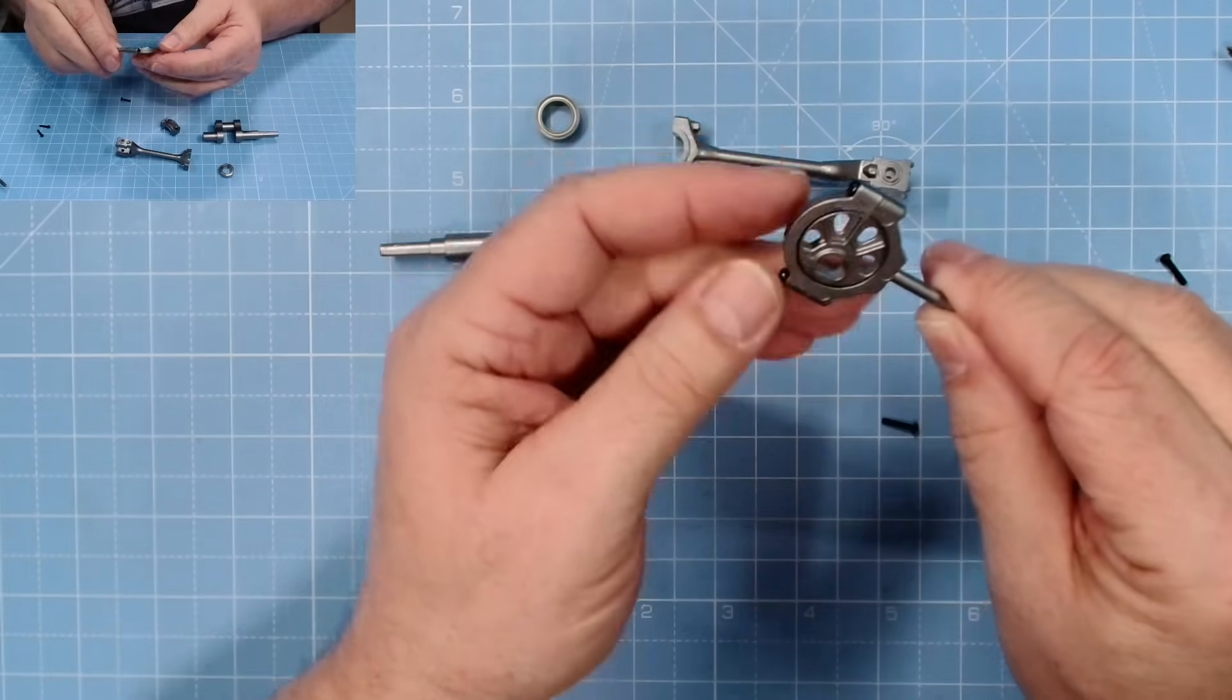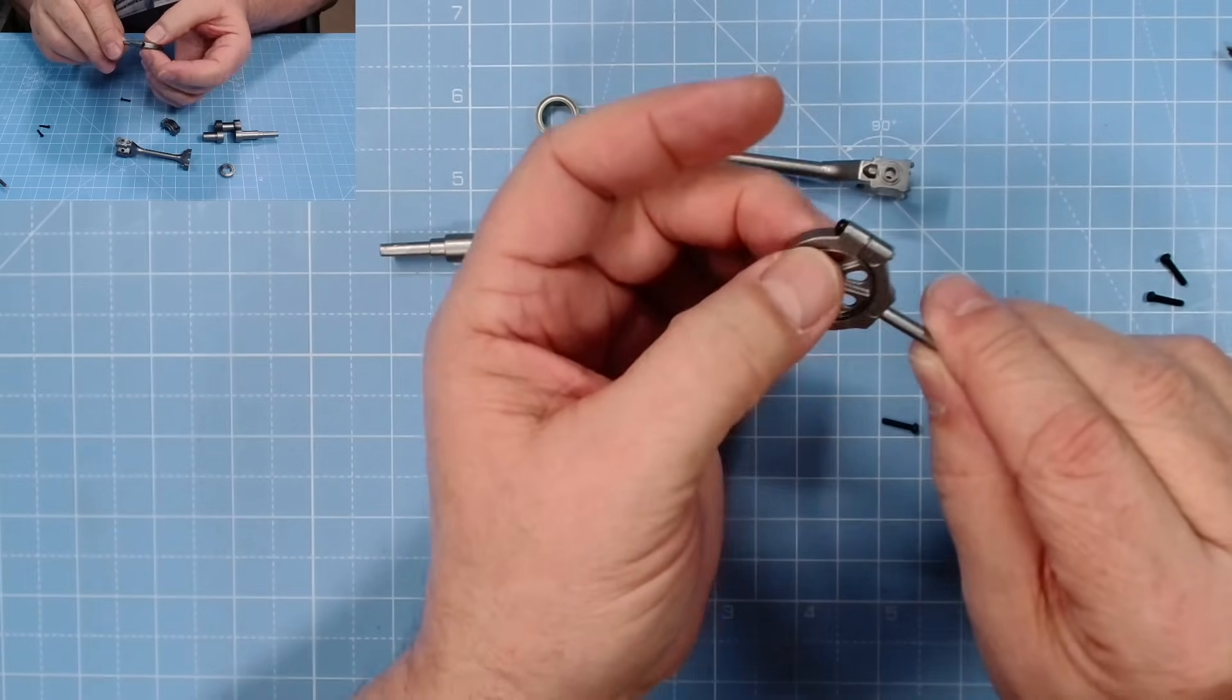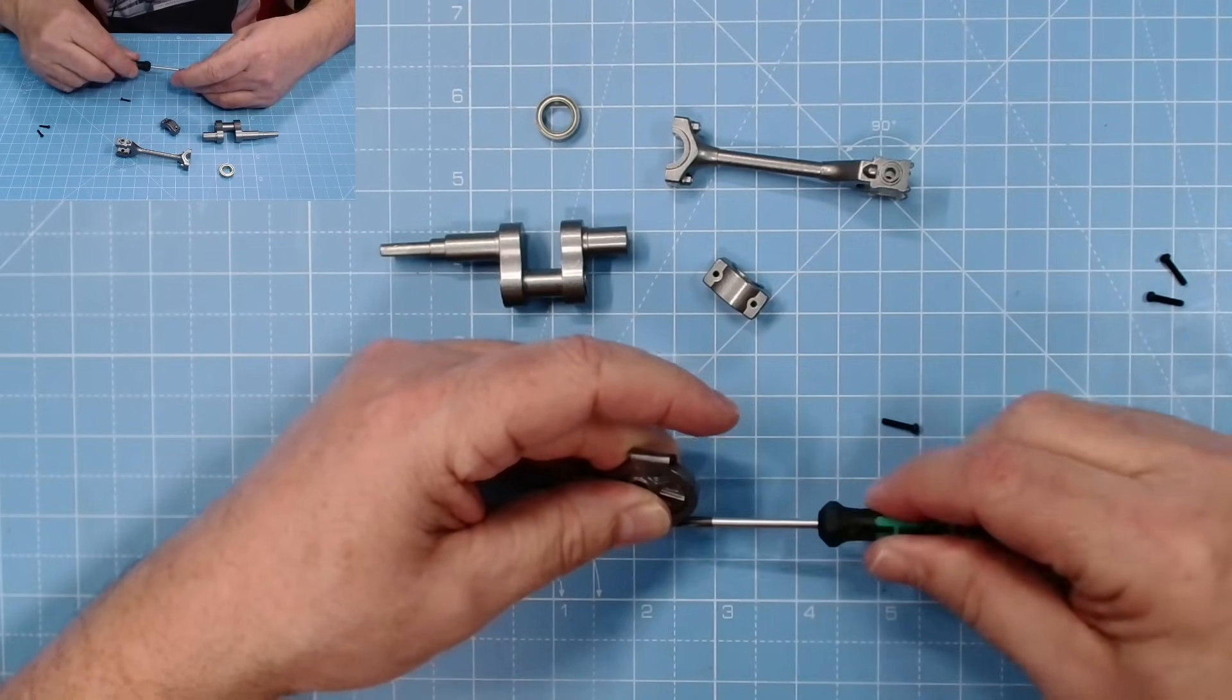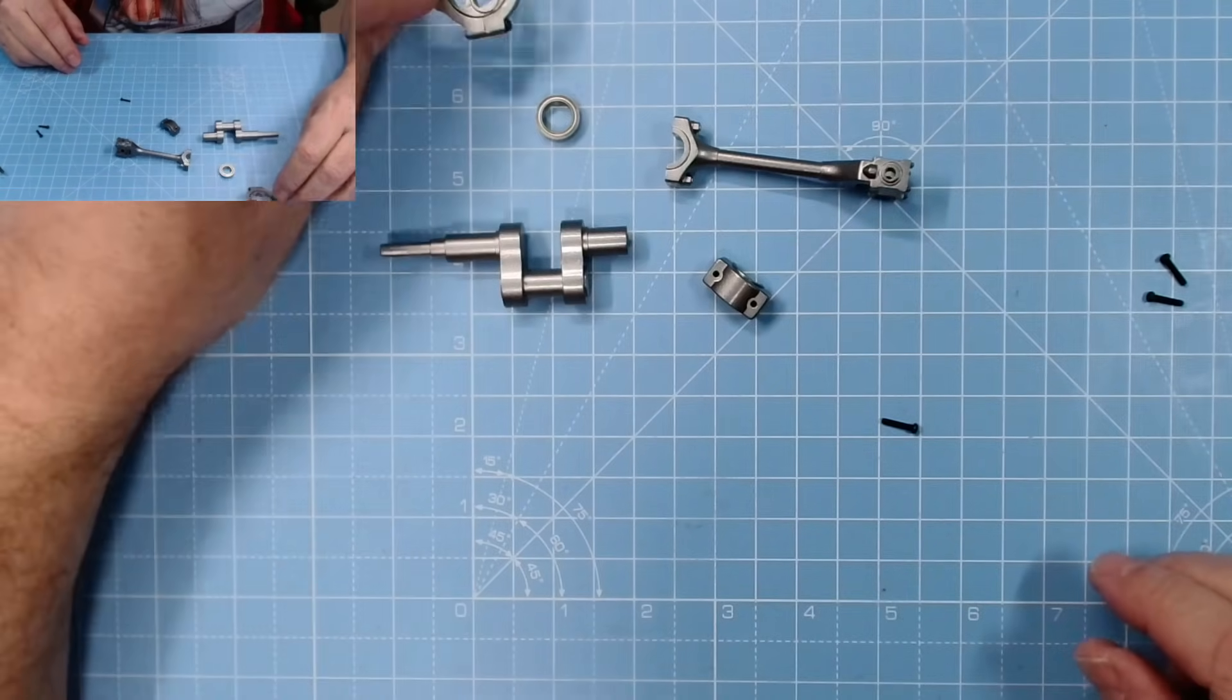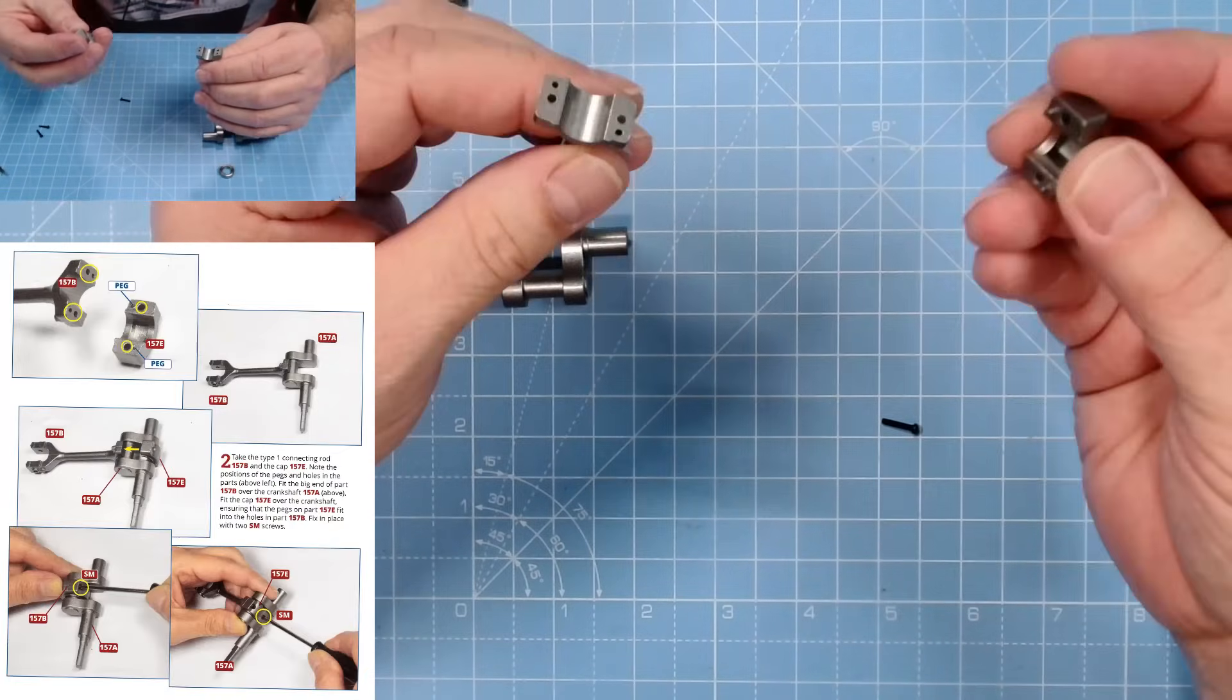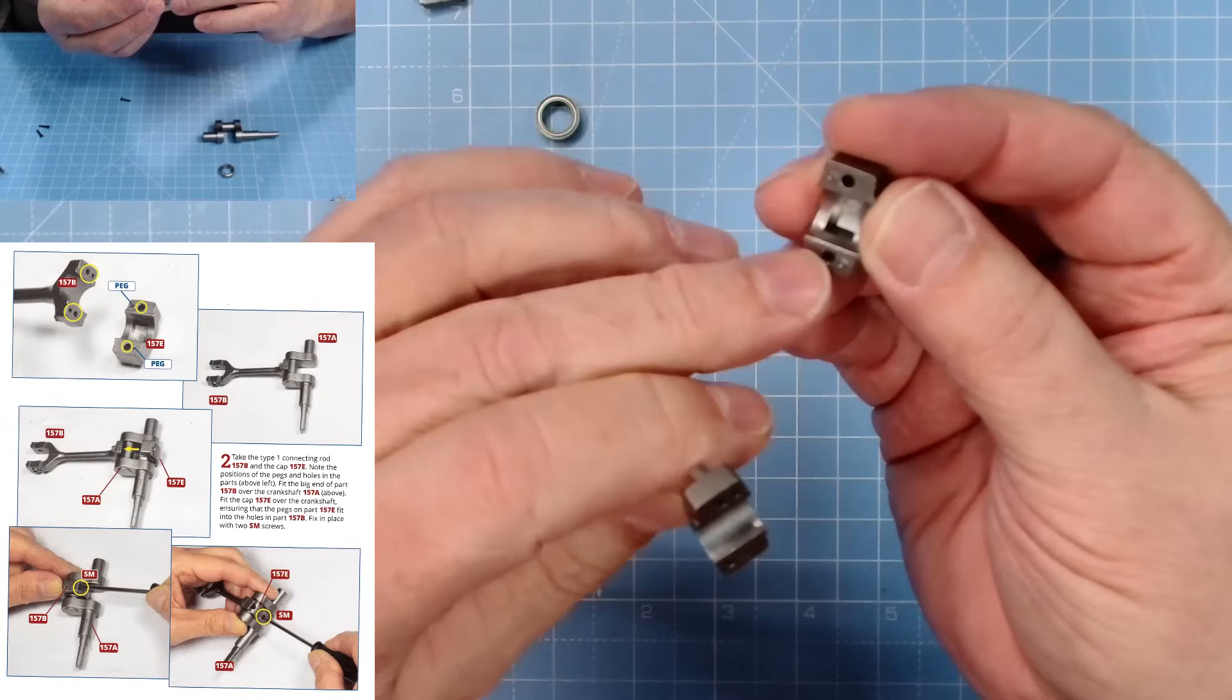Now there we go, that central piece 157F has to rotate, otherwise it's useless because we put the crankshaft in there anyway. There we go, that's the first parts. Now second, there we want 157B and 157E. That will go over, you can see there's a peg there and a peg there which will locate like that, but first of all we need to put it on 157A like that.